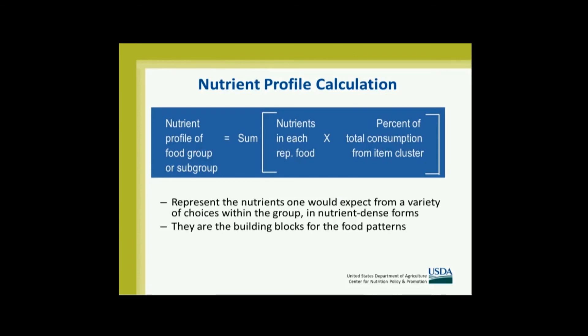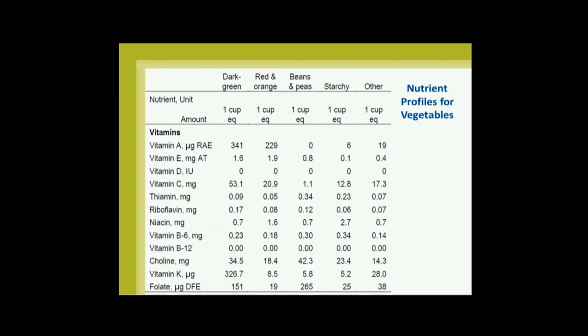The nutrients in each representative food are summed and that becomes the nutrient profile. This assumes that the nutrients we expect are based on population consumption of foods within that group — so of all red-orange vegetables, 7% of the nutrient values come from carrots; of all whole grains, about 14% come from whole grain oat cereals. All of these tables are publicly available on our CNPP website. Here's the nutrient profile for the red and orange vegetables — just one page showing the vitamins — what we would expect if a person ate a variety of red and orange vegetables similar to proportions consumed by the U.S. population, all in nutrient-dense form.